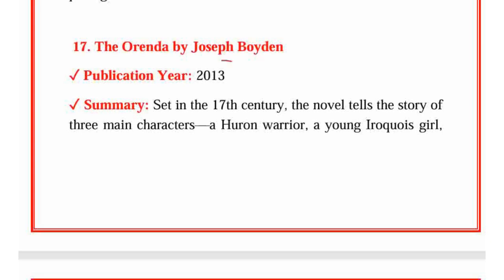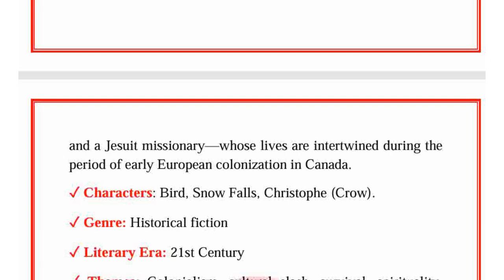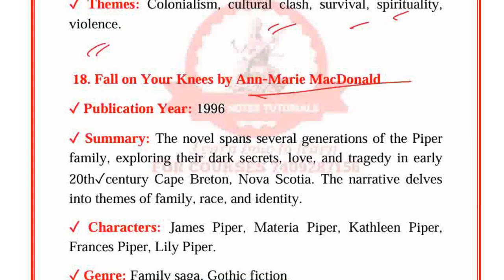The Orenda by Joseph Boyden, published in 2013. Set in the 17th century, the novel tells the story of three main characters — a Huron warrior, a young Iroquois girl and a Jesuit missionary — whose lives are intertwined during the period of early European colonization in Canada. Characters: Bird, Snow Falls, Christophe Crow. Genre: Historical fiction. Period: 21st century. Themes: Colonialism, Cultural clash, Survival, Spirituality and Violence.